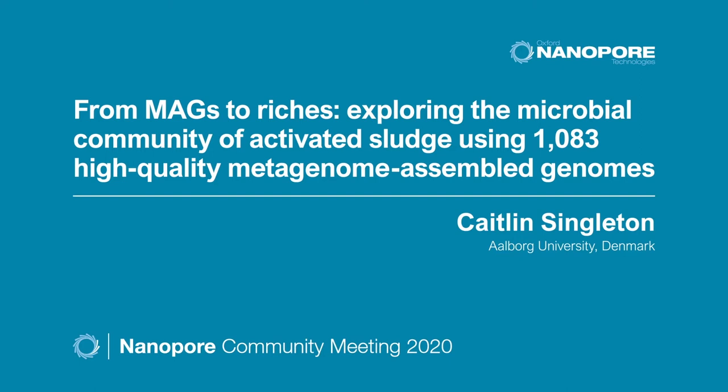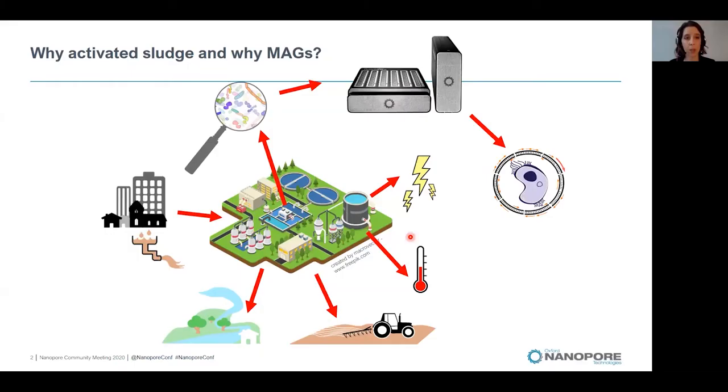Hi everyone, my name's Caitlin. I'm a postdoc at Aalborg University, supervised by Per Nielsen and Mads Albertsen, and today I'm going to talk to you about our research exploring the microbial community of activated sludge using 1,083 high-quality metagenome-assembled genomes.